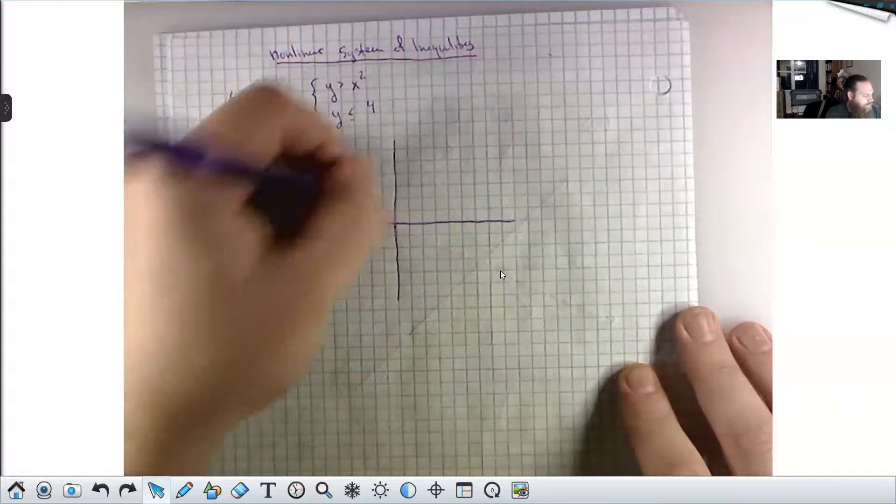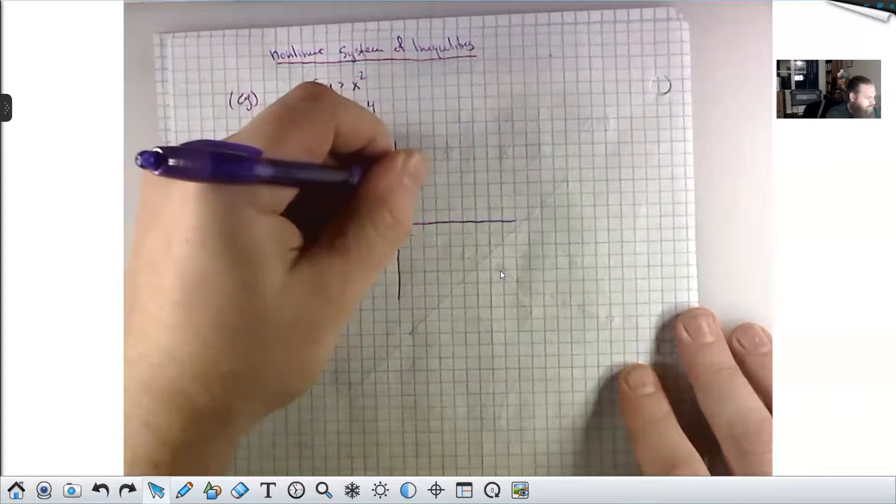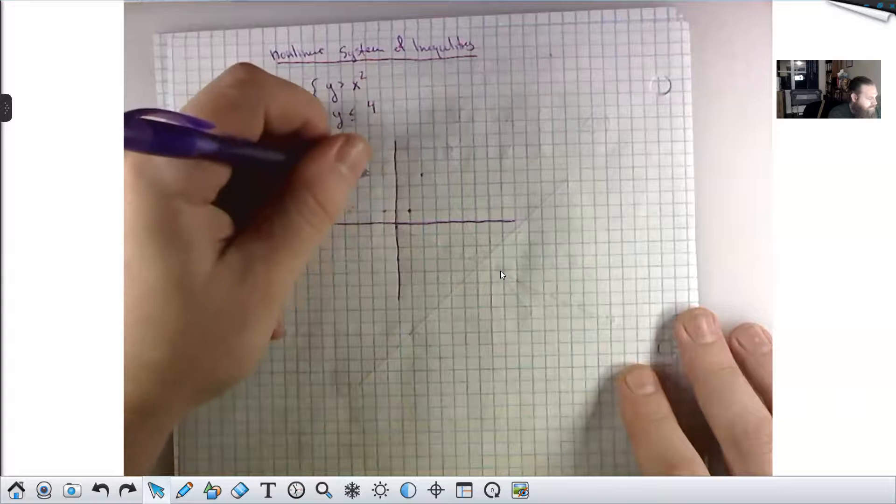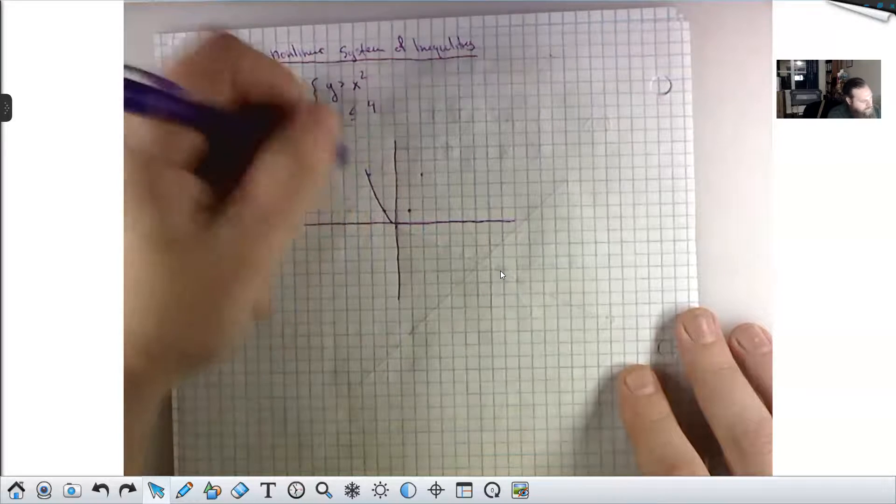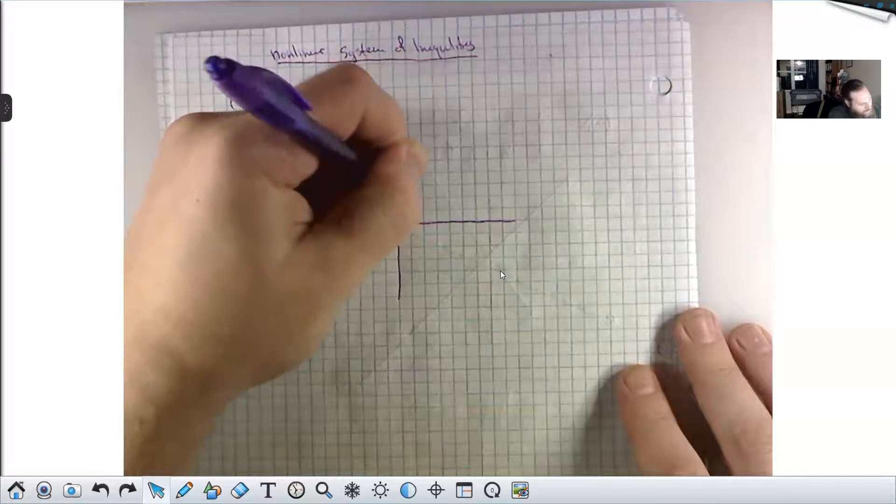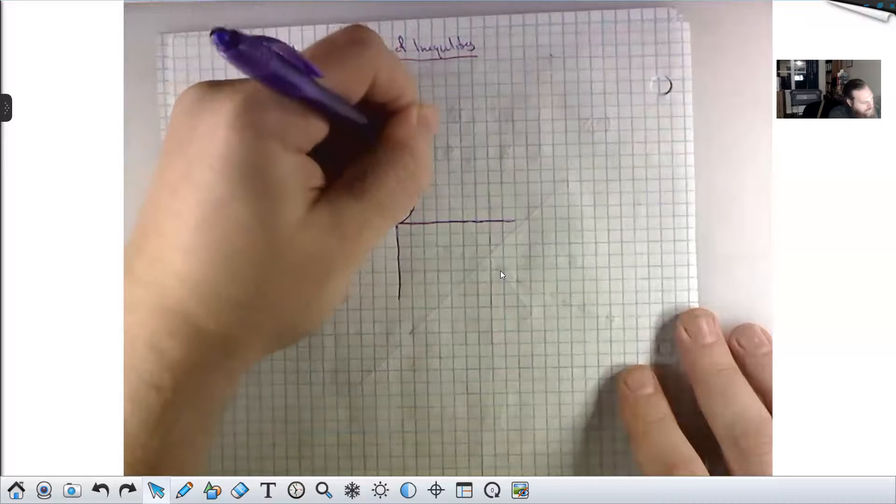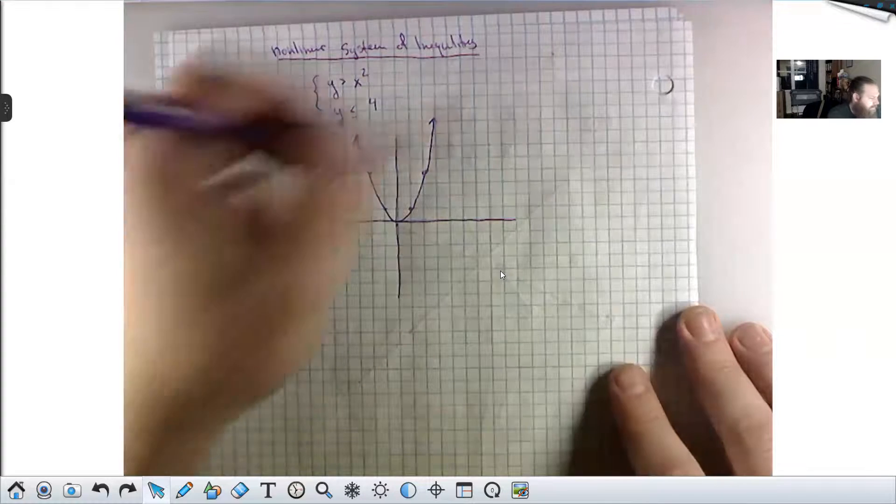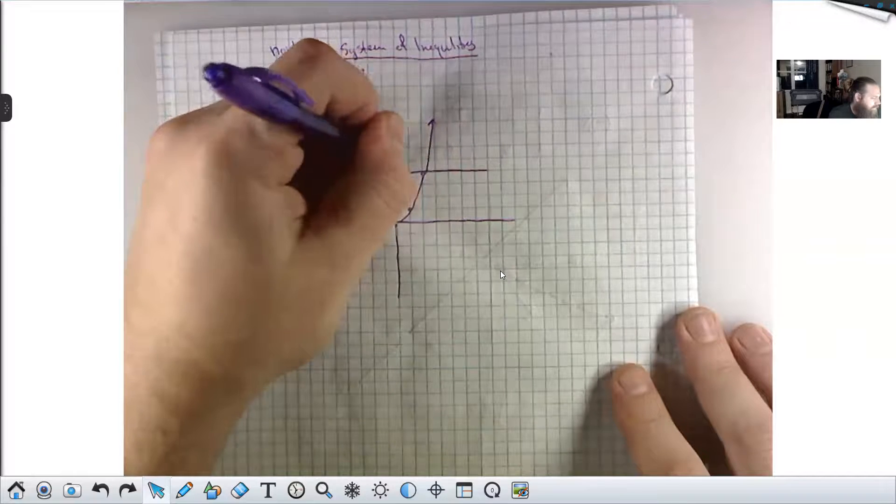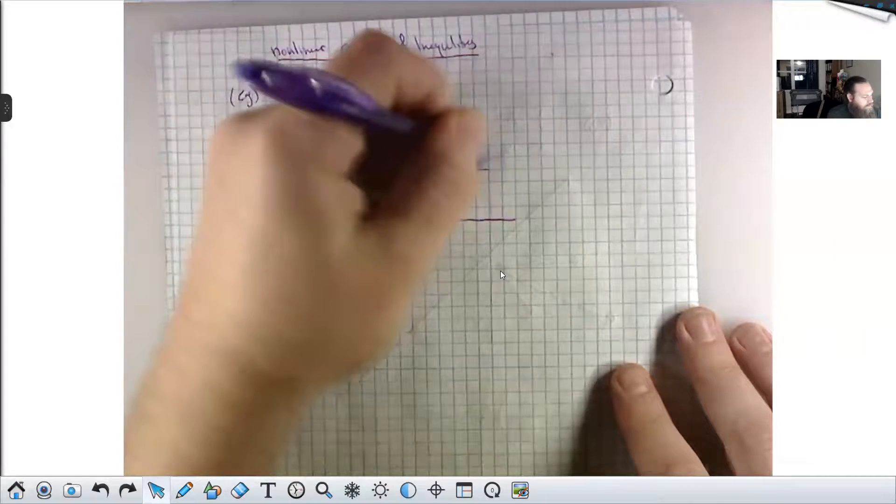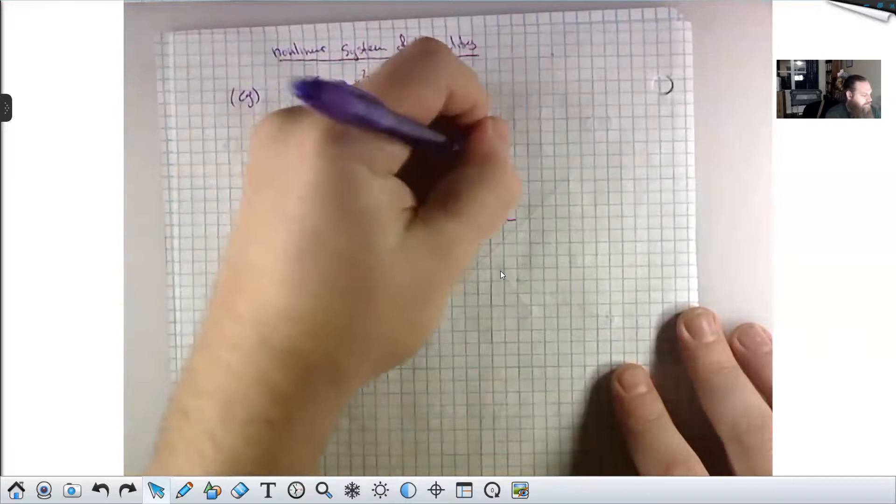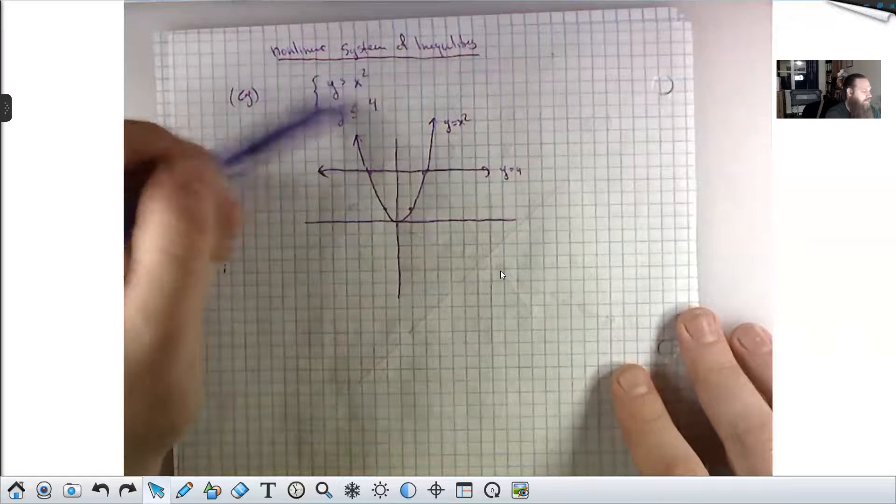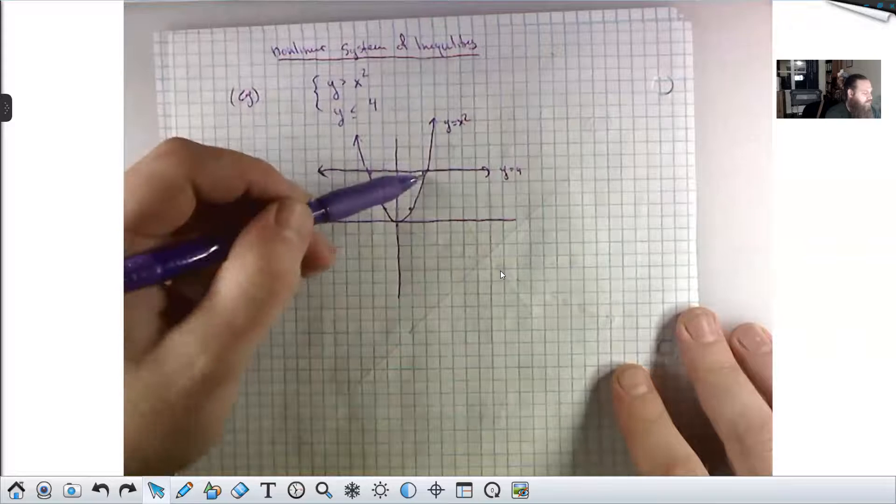Y is strictly greater than x squared. Y is less than or equal to, let's just say 4. Really simple non-linear system. Y is strictly greater than x squared, and that means we draw the parabola of y equals x squared with our curve. This is y equals x squared, y equals 4 is this. The stuff that's above x squared and below 4, I'm talking about this region.